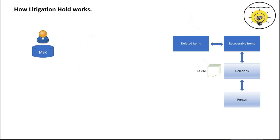In the backend, the Deletions folder is a sub-folder of the Recoverable Items folder. Any email moved from Deleted Items goes to the Deletions folder and stays for 14 days. If the user doesn't recover that email within 14 days, it will be purged and neither the user nor an administrator will be able to recover it once it is deleted from the Deletions folder.